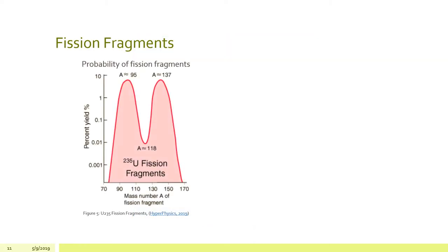Fission fragments are those two chunks that we saw in the previous GIF. Those fission fragments are graphed here on their percent yield per mass number. And you can see that atomic number 95 and 137 are the highest.